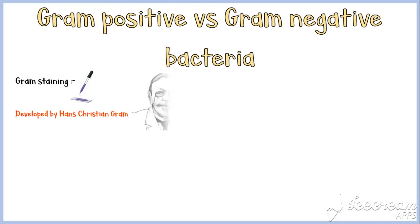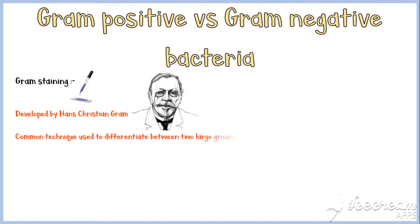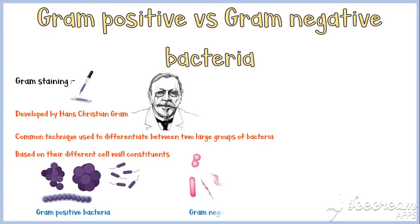Gram staining technique was originally developed by the Danish biologist Hans Christian Gram. It is a common technique used to differentiate between two larger groups of bacteria based on their different cell wall constituents. According to this method, there are two major groups of bacteria: gram-positive bacteria, which stain in purple with gram stain, and gram-negative bacteria, which stain in pink with gram stain.